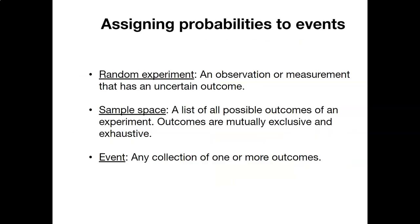So how do we assign probabilities to an event? There are a couple of ways. We could do a random experiment — some kind of measurement or observation that has an uncertain outcome. We also need to list a sample space, which is a list of all possible outcomes of an experiment. When we flip a coin, we can get heads or tails. If a baseball team plays a game, they could win, lose, or in a very rare case, tie. Events are just a collection of one or more outcomes — one baseball game, one coin flip.